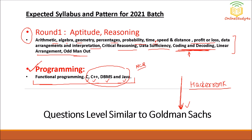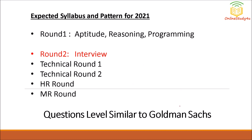So Round 1 will consist of aptitude, reasoning, and the programming module. Please solve the Goldman Sachs problems that happened recently — that is the best preparation for Round 1.